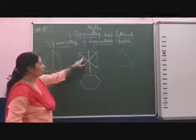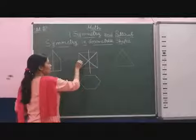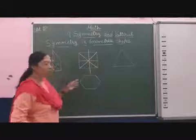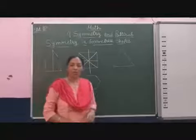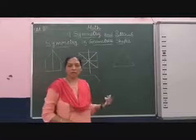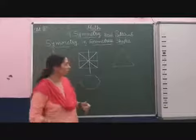So this way 1, 2, 3, 4, one more also I can draw here. So 6 lines I use here to make this square into equal parts.